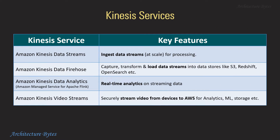Kinesis services: Amazon Kinesis Data Streams ingests data streams at scale. Kinesis Data Firehose loads data streams into data stores like S3, Redshift, OpenSearch, etc. Kinesis Data Analytics is for real-time analytics on streaming data. Kinesis Video Streams streams video from devices to AWS.